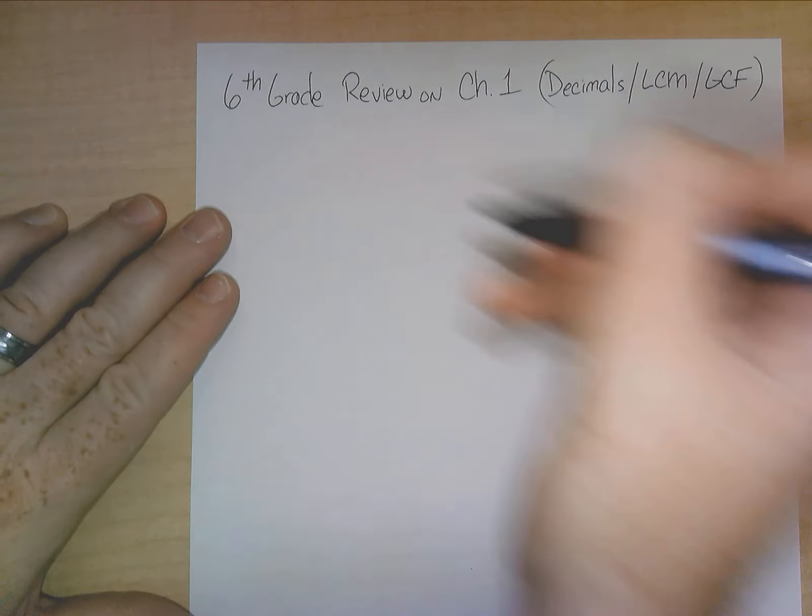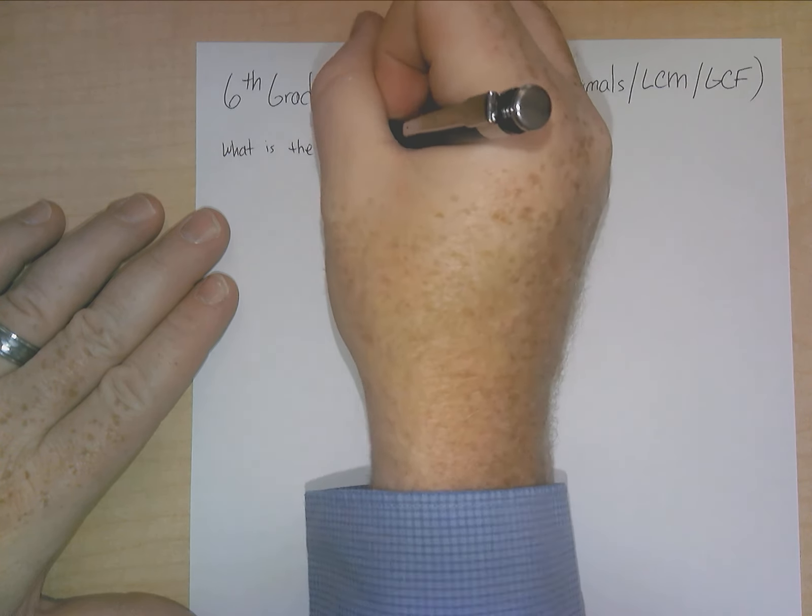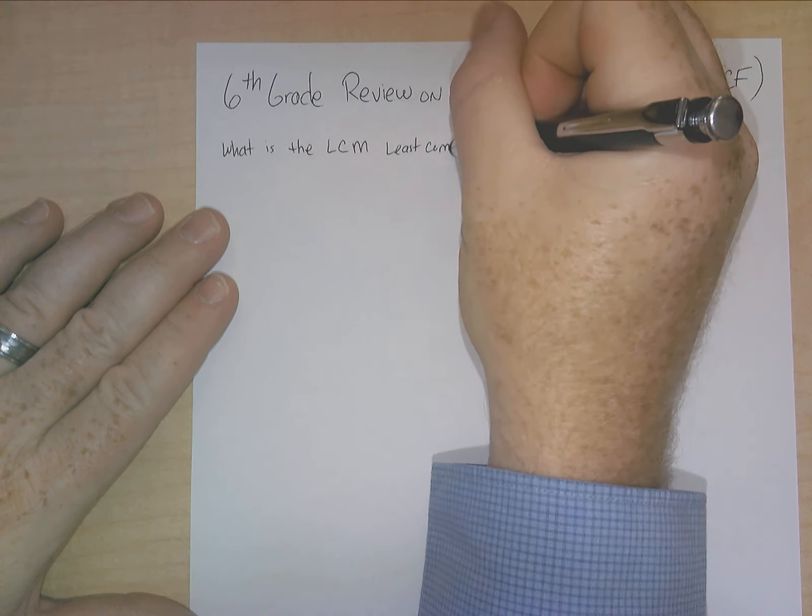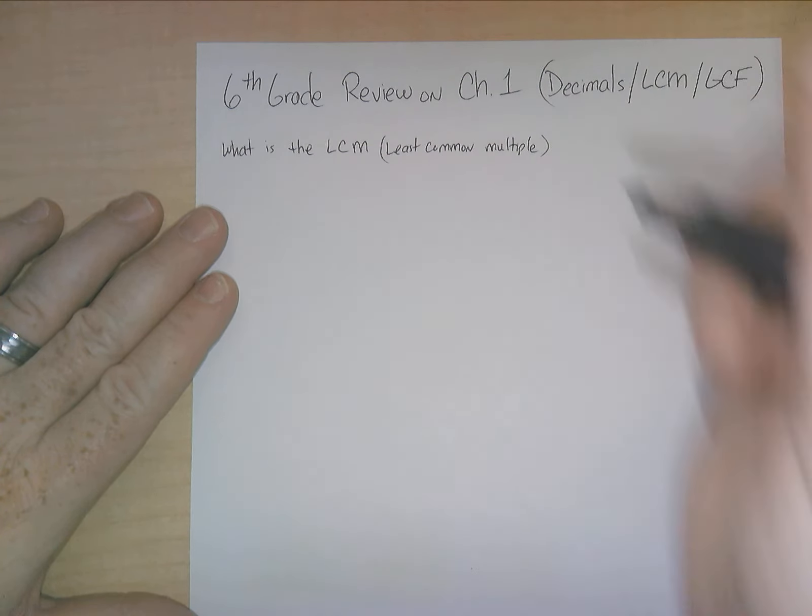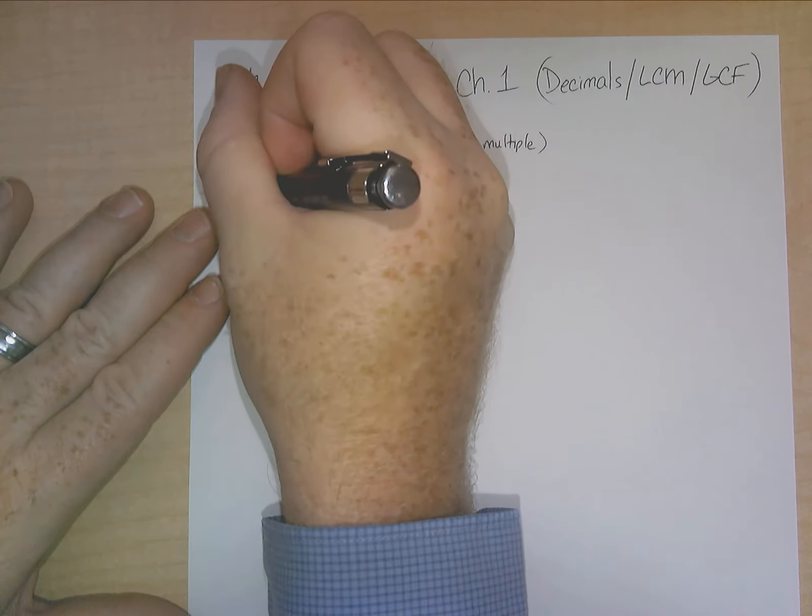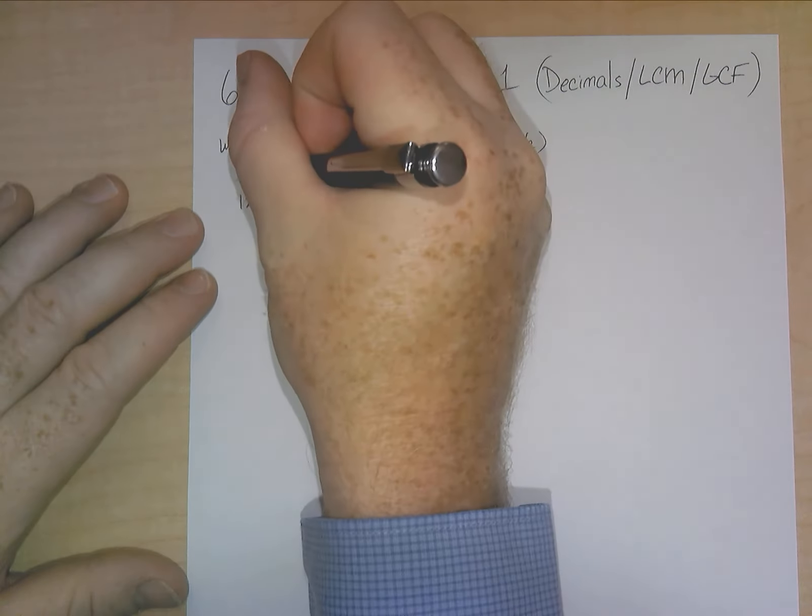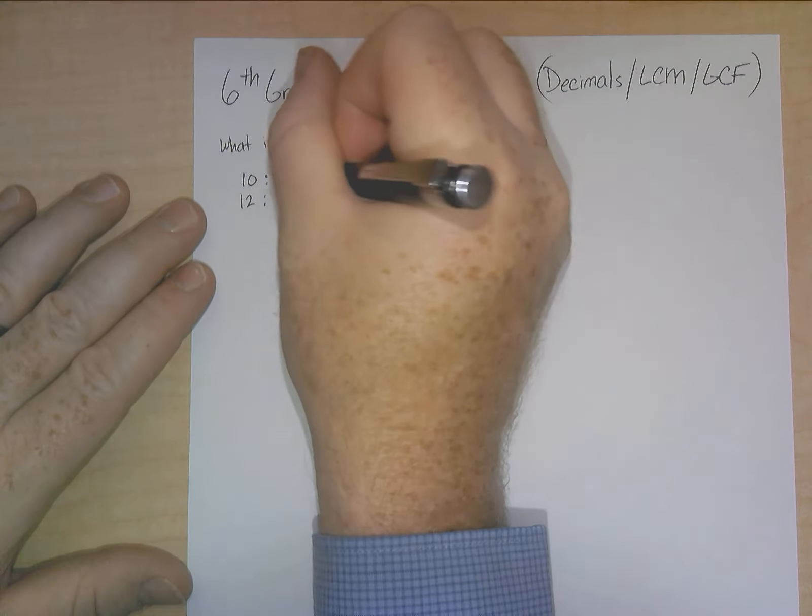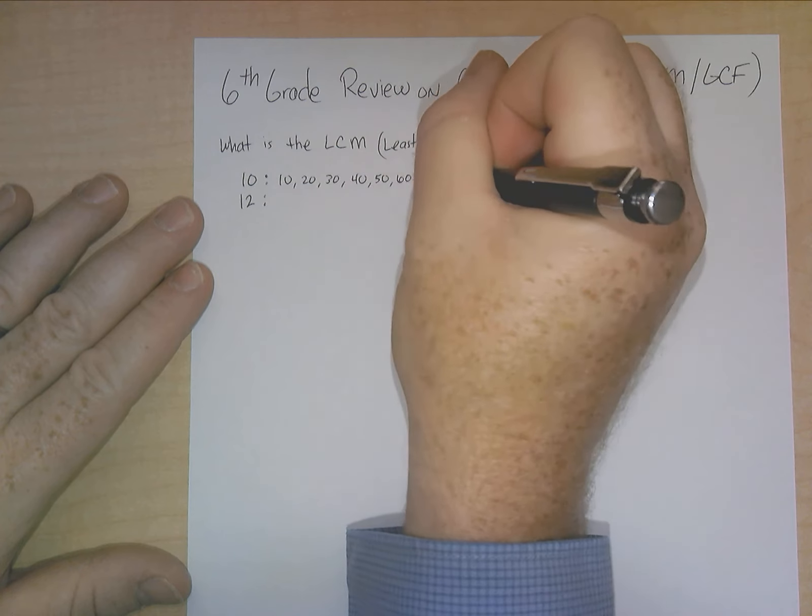So if I were to ask, what is the least common multiple of two numbers? Let's make them a little bit easier, not too difficult. Let's say 10 and 12. One method would be using the listing method. The listing method is basically where you just list out all the multiples of 10. So it would be 10, 20, 30, 40, 50, 60, and you basically just keep going.